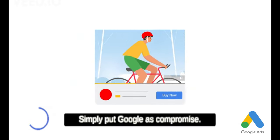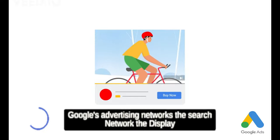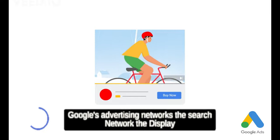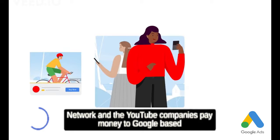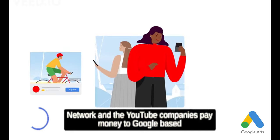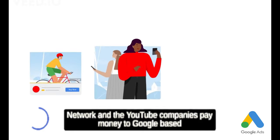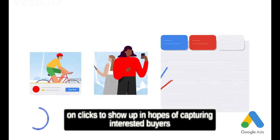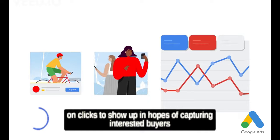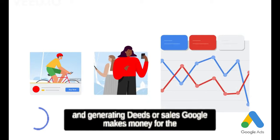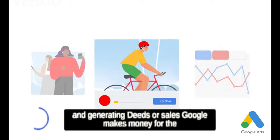Simply put, Google Ads comprise Google's advertising networks: the search network, the display network, and YouTube. Companies pay money to Google based on clicks to show up, in hopes of capturing interested buyers and generating leads or sales.